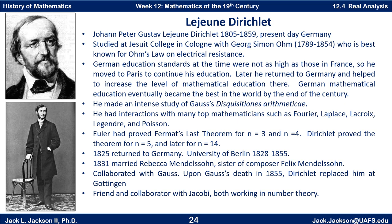In 1825, he returned to Germany and taught at the University of Berlin, doing his research there from 1828 to 1855. In 1831, he married Rebecca Mendelssohn, the sister of the famous composer Felix Mendelssohn. He collaborated with Carl Gauss, and in 1855, when Gauss died, Dirichlet took his position at Göttingen. So the last four years of his life, he held the same chair that Gauss had held at Göttingen.